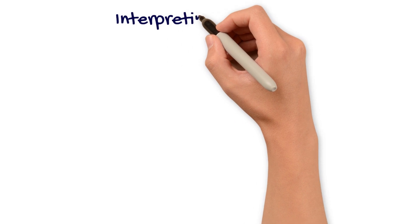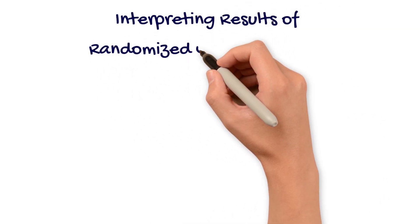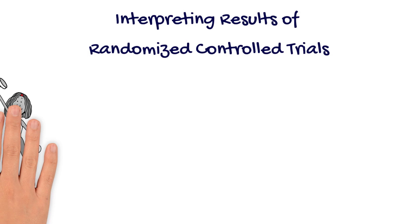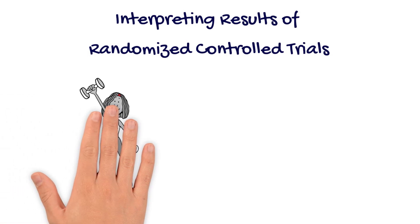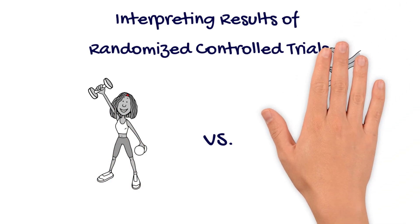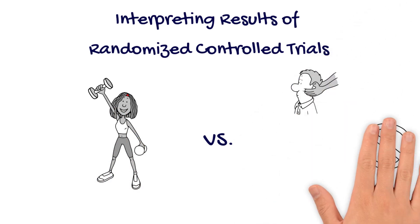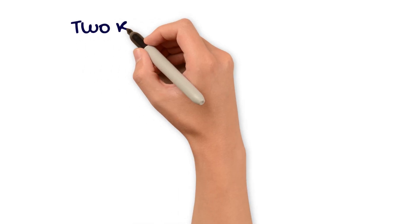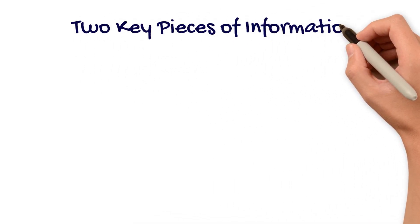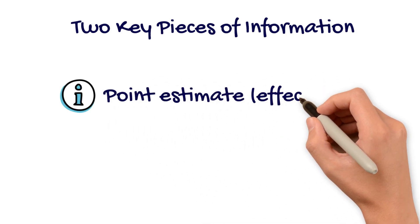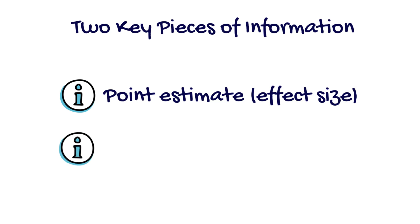We will discuss the important pieces of information that help us interpret findings from randomized controlled trials comparing one intervention — for example exercise — to another intervention, for example manipulation, no intervention, or a placebo intervention. There are two key pieces of information to pay attention to: the point estimate, otherwise known as the effect size, and the confidence interval.